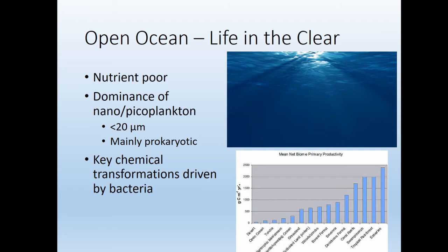Moving out to the open ocean, a thousand miles from shore — it's extremely non-productive. Primary productivity in grams of carbon per square meter per year is very low. In oligotrophic open ocean settings, you have nanoplankton or picoplankton — super tiny, mainly prokaryotic organisms still doing photosynthesis — driving the ecosystem.